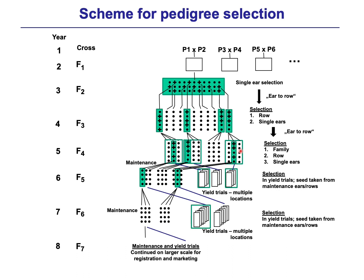In the F4 generation we normally move towards the F5 generation. We select the row we want to continue, take a few ears, and put them into maintenance breeding. The remaining bulk of the family is used as bulk seed for yield trials at multiple locations.